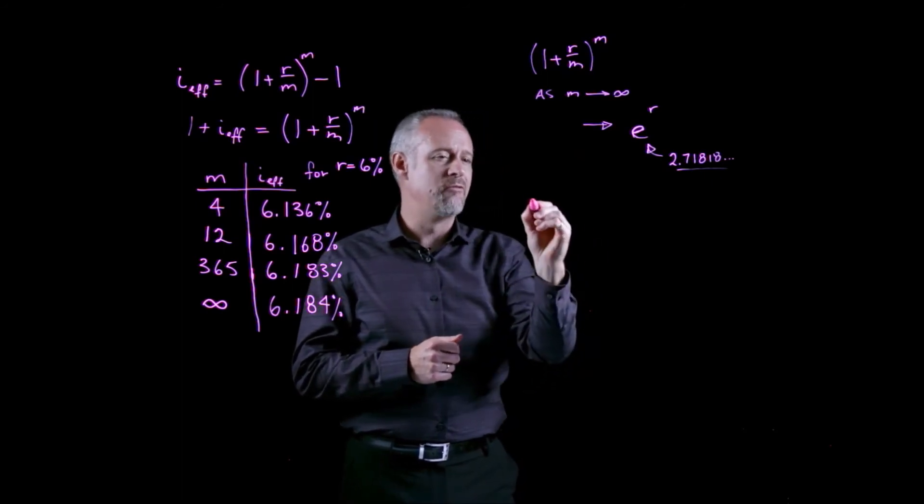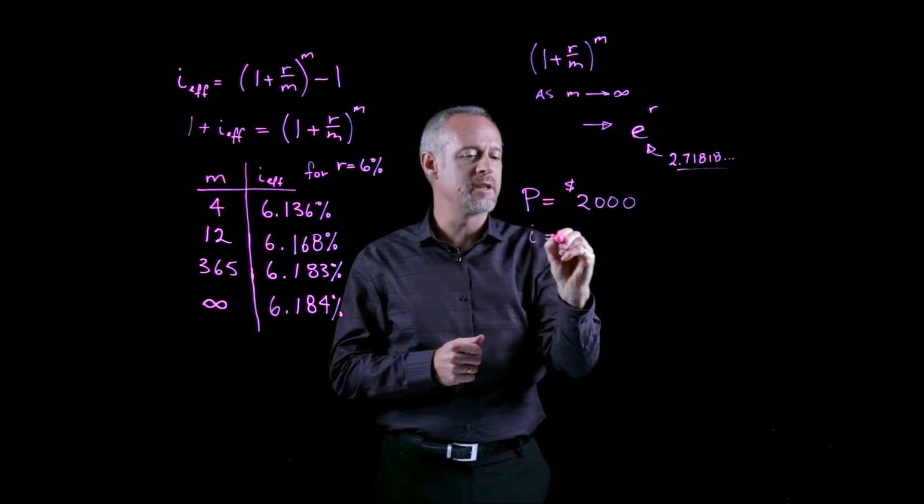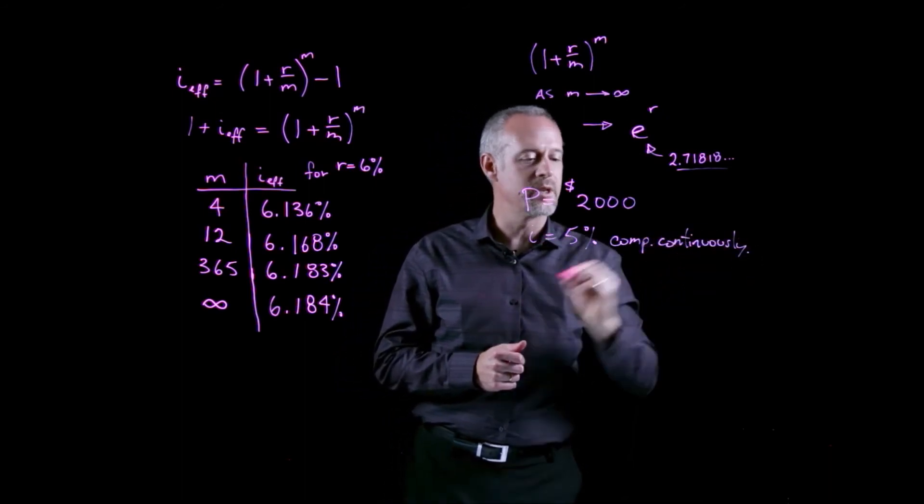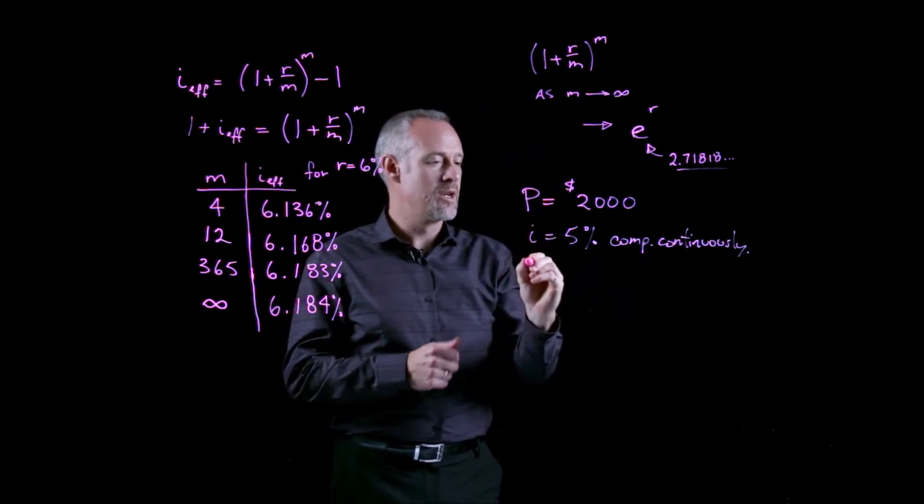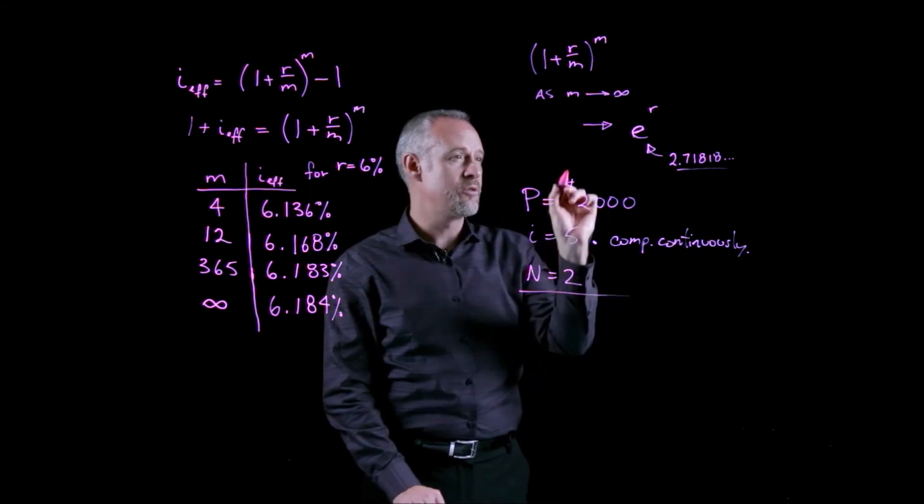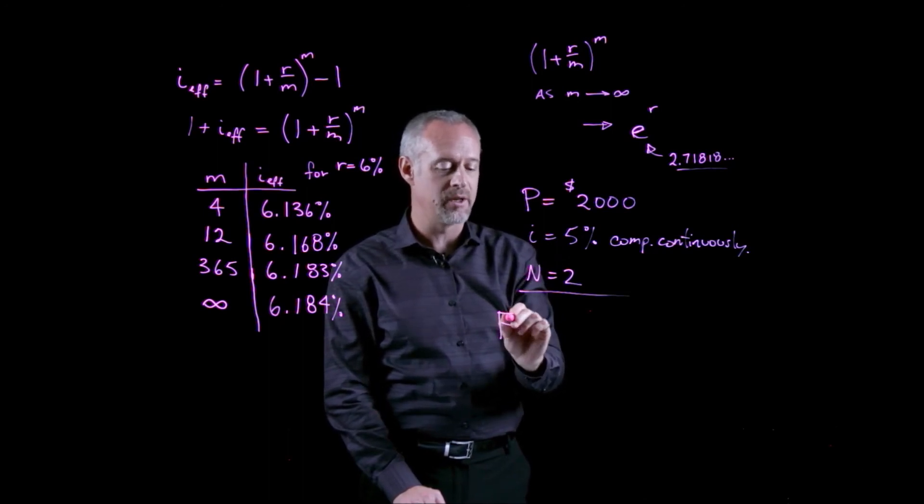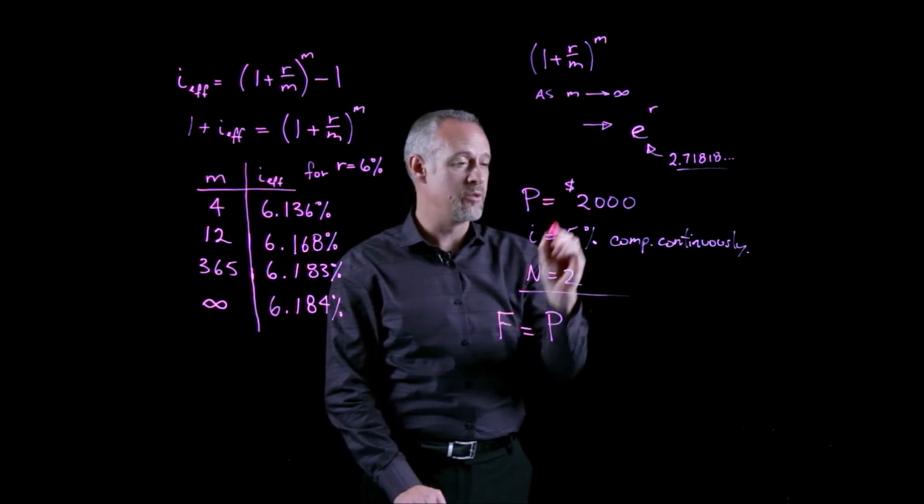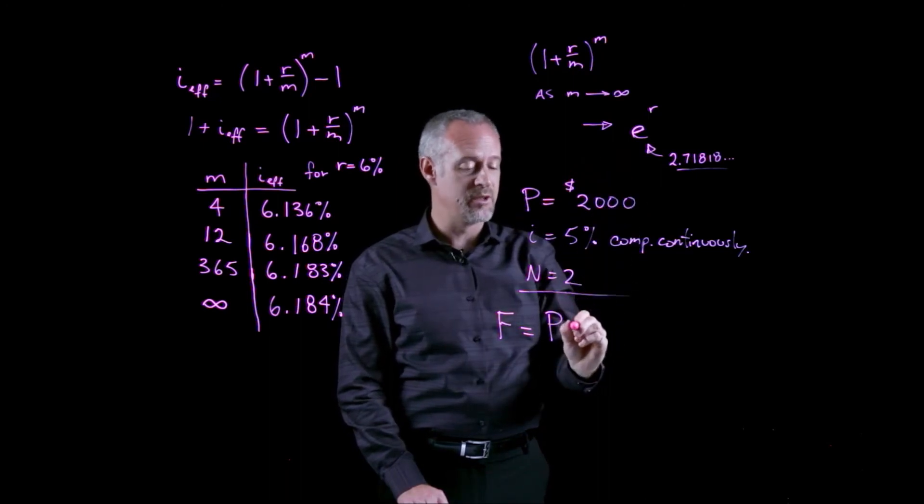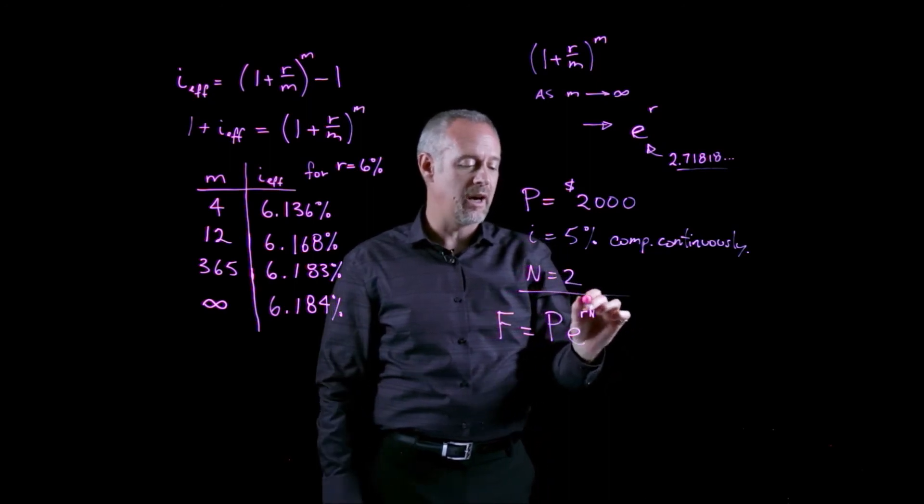In this particular problem, we're actually given an investment amount equal to $2,000. And our interest rate is 5% compounded continuously for a time period of 2 years, or n is equal to 2. I actually use a new version of the formula to calculate the future value of this investment. My formula under continuous compounding becomes the future value is equal to the present value, the 2,000, times, instead of 1 plus i to the n, I actually insert e to the nominal interest rate times the number of periods.